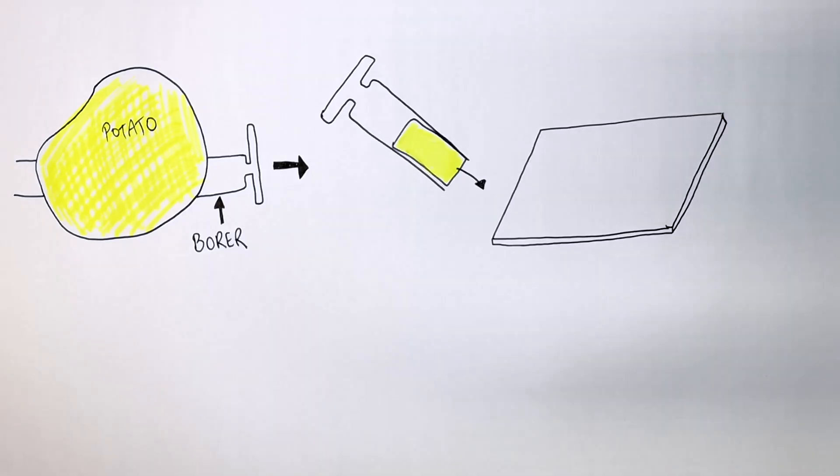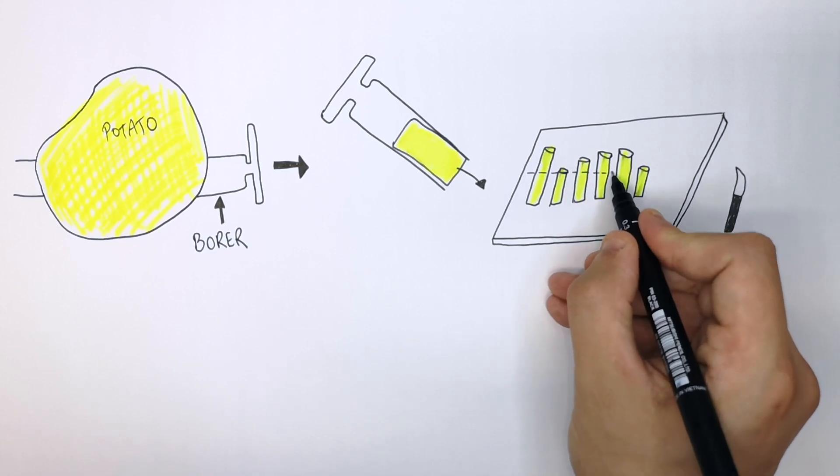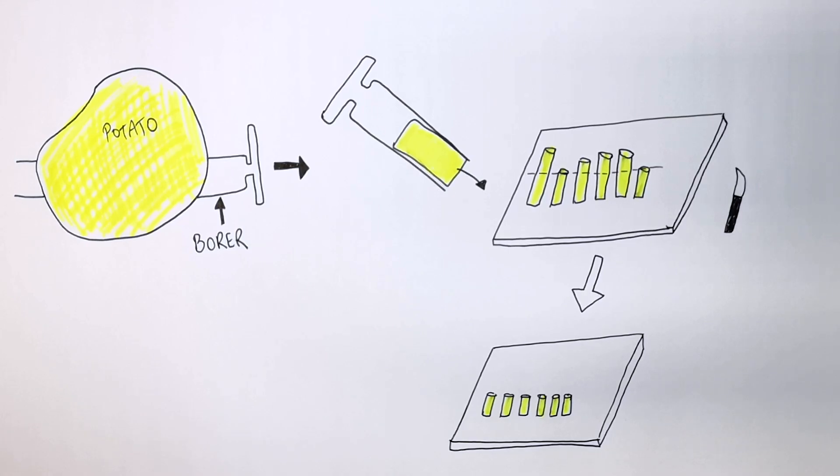You use the same potato borer to remove six other cylinders of potato, which will be of varying lengths. You then use a scalpel to cut the cylinders down to the same length. This is a control variable. The cylinders of potato must be the same lengths.